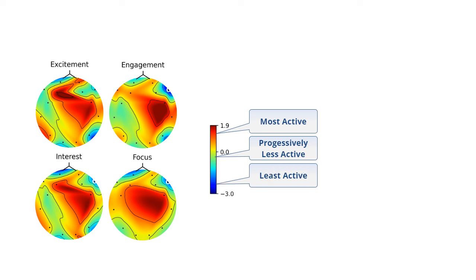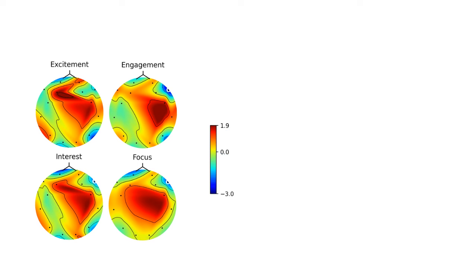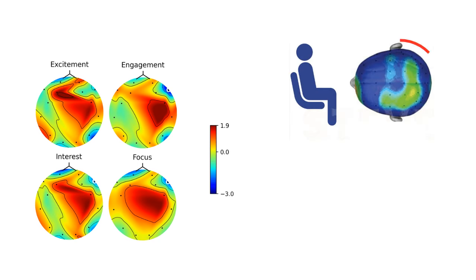Now let's see how your brain looks when you lead a sedentary life and have been sitting for a long time. As you can see, it's far less active. Now let's see what happens...